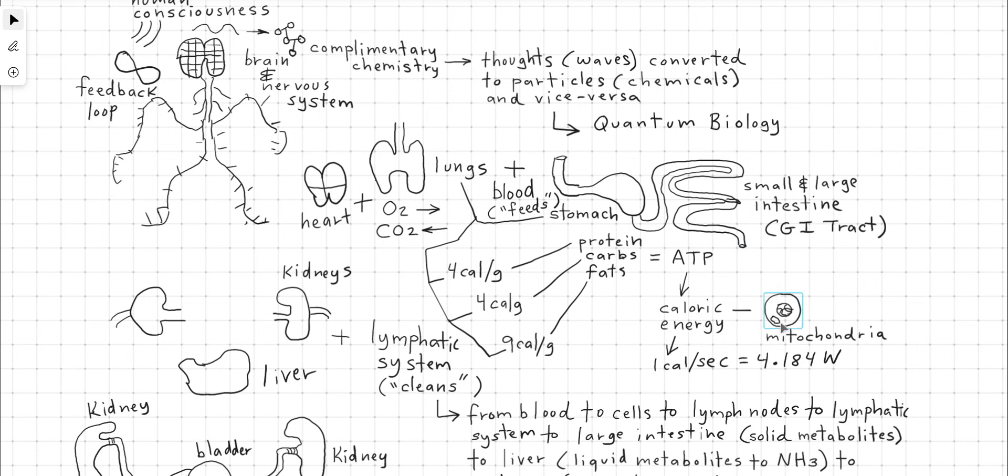Inside each cell is the mitochondria, which then converts the food, glucose, and oxygen into caloric energy. So an example of caloric energy output, the metric system equivalent to the BTU, we have one calorie per second is equal to 4.184 watts of power.